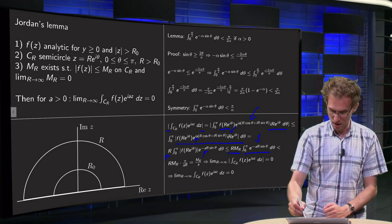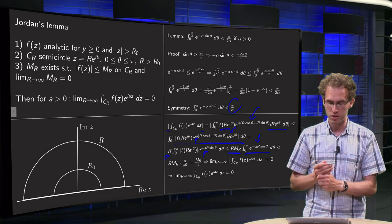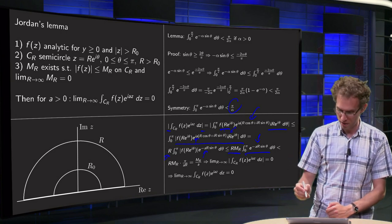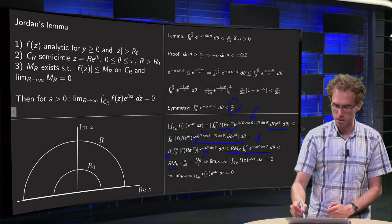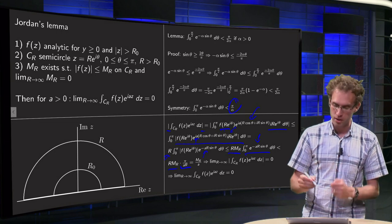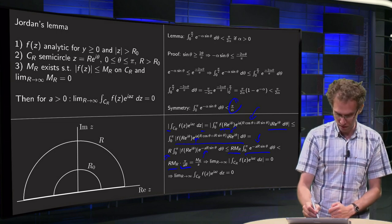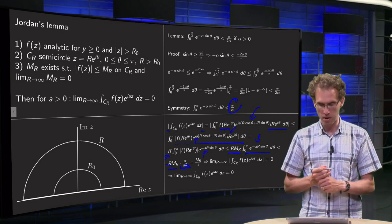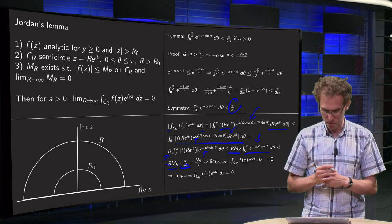Because if M_R would just go to zero, this R times M_R could still blow up. But this additional factor will help us to show that this integral goes to zero if R goes to infinity because we have this inequality. And using α equals aR you get R times M_R times π over aR.